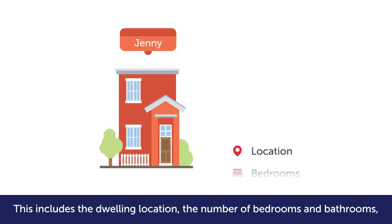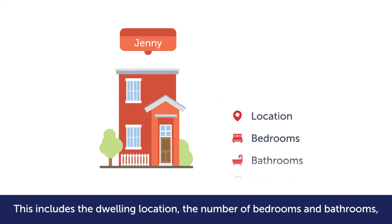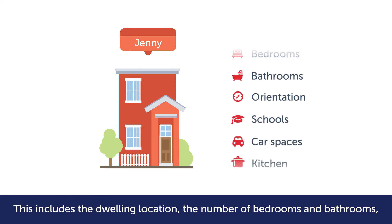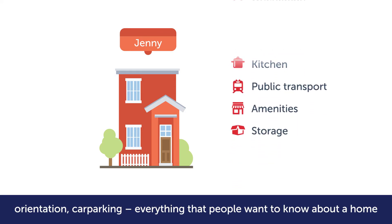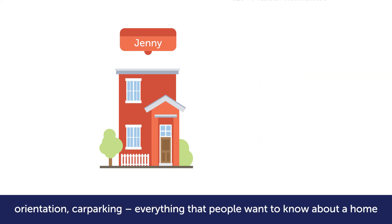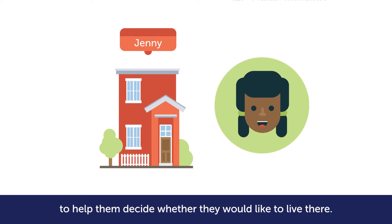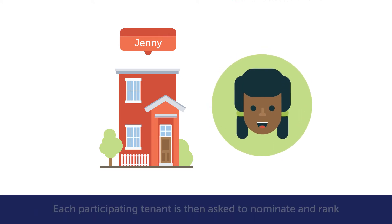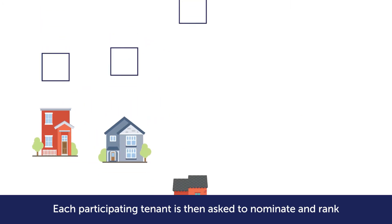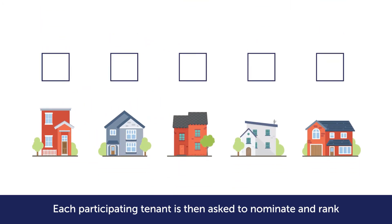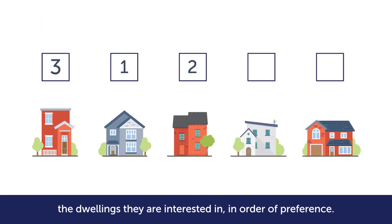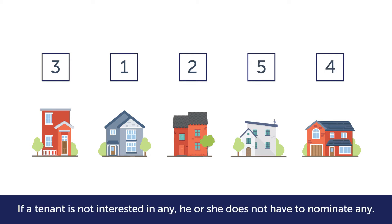This includes the dwelling location, the number of bedrooms and bathrooms, orientation, car parking — everything that people want to know about a home to help them decide whether they would like to live there. Each participating tenant is then asked to nominate and rank the dwellings they are interested in, in order of preference. If a tenant is not interested in any, he or she does not have to nominate any.